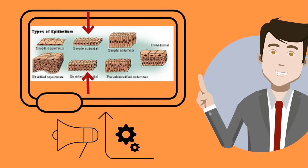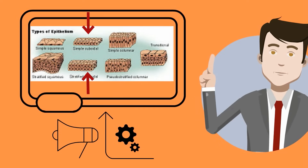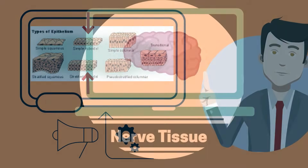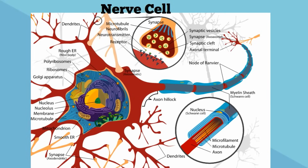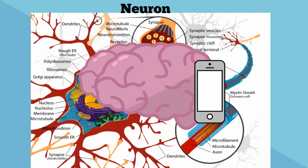Epithelial tissues line the outside of our body and inside of our vessels and help keep us alive. Nerve tissues are found in your brain, spinal cord, and the peripheral nervous system. Many nerve tissues are made up of nerve cells called neurons, whose job is to transmit electrical signals throughout the body and allow your brain to communicate with your body.